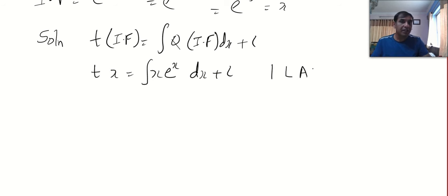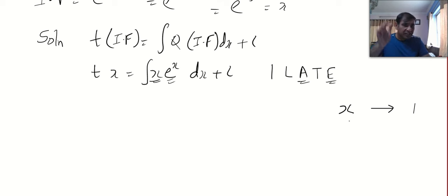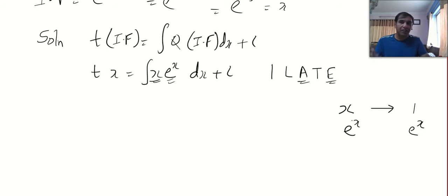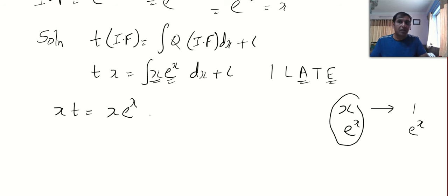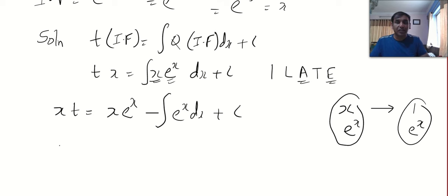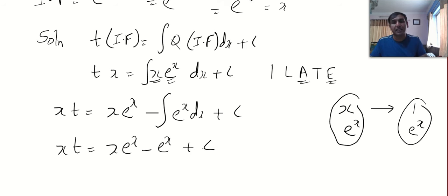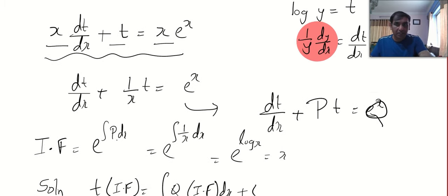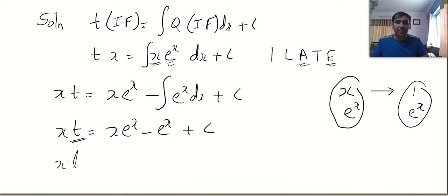I'll apply the ILATE rule for integration by parts. Write the first function (x) and its derivatives, and below that the integrals of the second function (eˣ). So t·x = x·eˣ − ∫eˣ dx + c = x·eˣ − eˣ + c. Now replace t with log y: x·log y = x·eˣ − eˣ + c. That's the solution to the second problem.